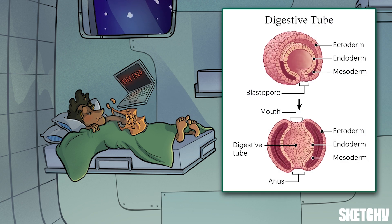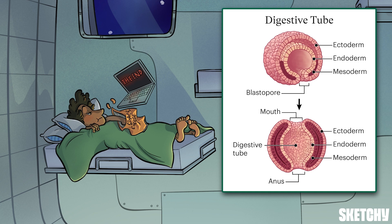Endodermal cells are the ones that find themselves on the inside of the gastrula after invagination. These cells form a tube that continues to grow until it eventually passes all the way through the organism, forming a primitive gut with openings on either side. Those openings become the mouth and the anus, and the tube ultimately differentiates into all of the digestive organs in between, plus associated organs like the liver, gallbladder, and pancreas.